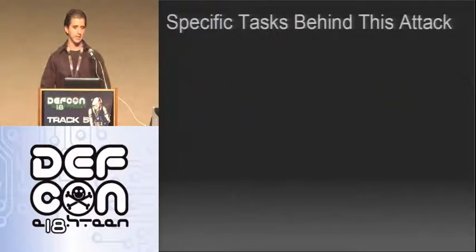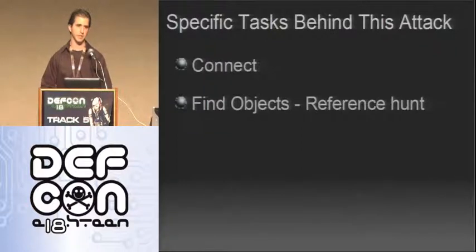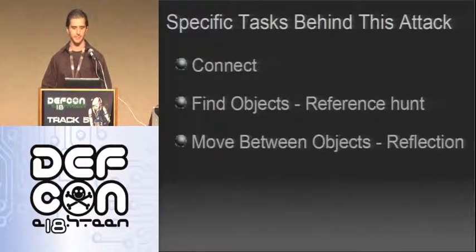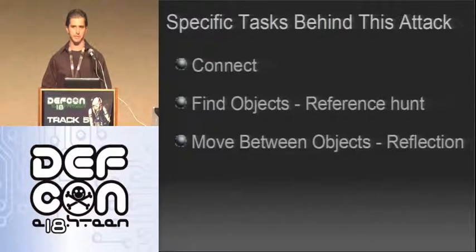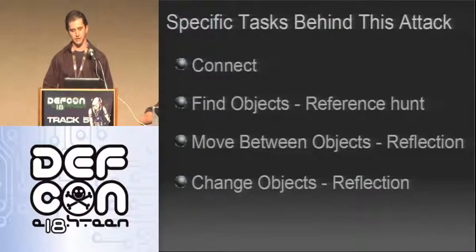The specific tasks behind this attack: connect into your target application, find objects and hunt for references to the specific object you want to attack — like a timer, SQL connection, or TCP connection. Move between objects; depending on your connection method, you might need to hunt objects, while other methods give you references for free. Finally, change objects — using reflection, we look at the meta structure of an object, use its signature, and edit it at runtime.